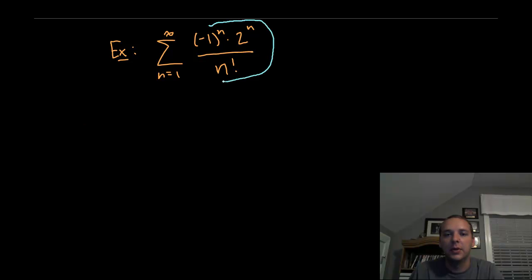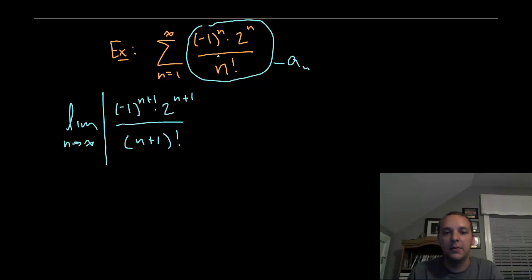So this term here that we're adding up will be considered as our a sub n. And so we'll take the limit as n approaches infinity. Big absolute value, don't forget the absolute value, of a sub n plus 1, which means we'll take all these n's out and replace them with n plus 1's. And then another common thing that we're typically going to do is many times the series will have fractions.